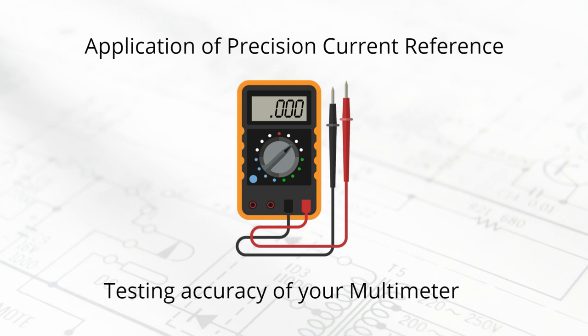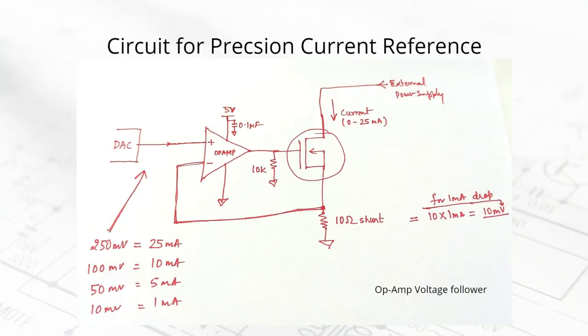Let me show you how I extended the second channel for current reference. I added an extra circuit — a constant current load circuit using an op-amp as a voltage follower, an N-channel MOSFET, and a shunt resistor for current sensing. A precision millivolt signal from the DAC is given as input to the circuit to control the current output. When a voltage is applied to the positive terminal of the op-amp, it drives its output and tries to match that same voltage at the negative pin.